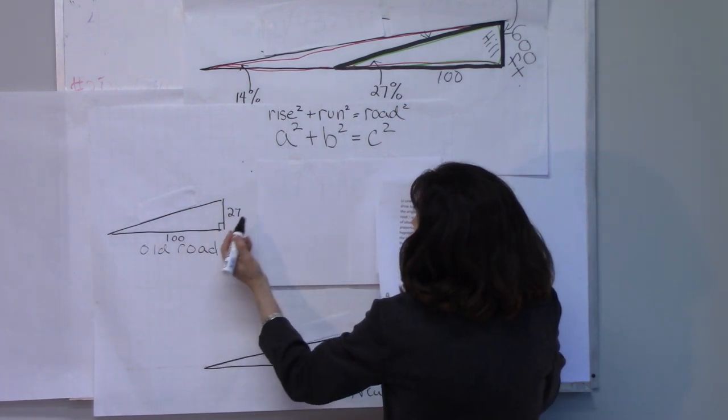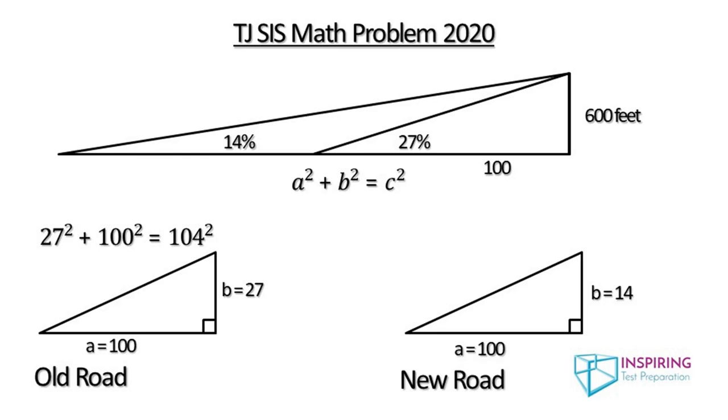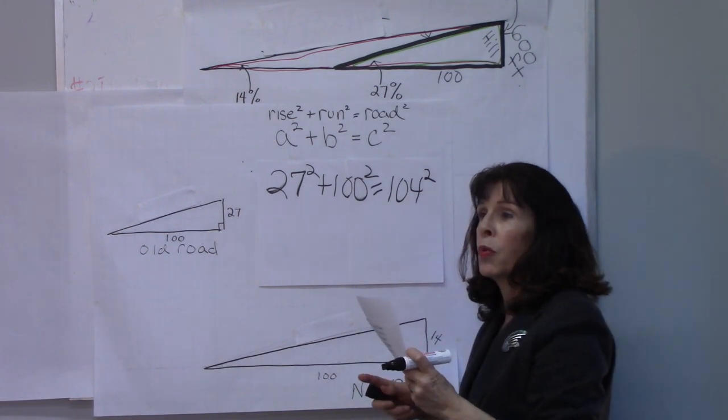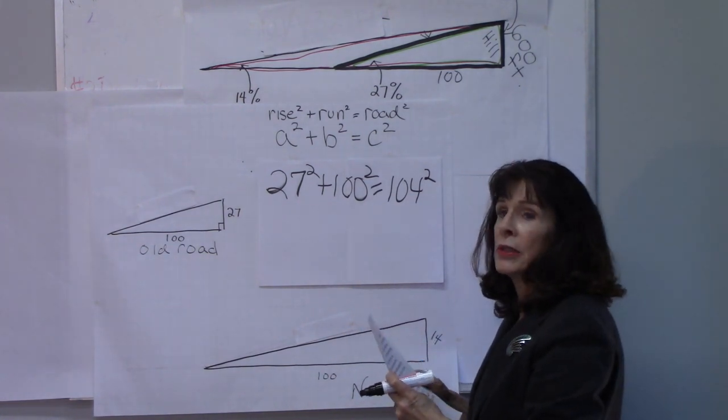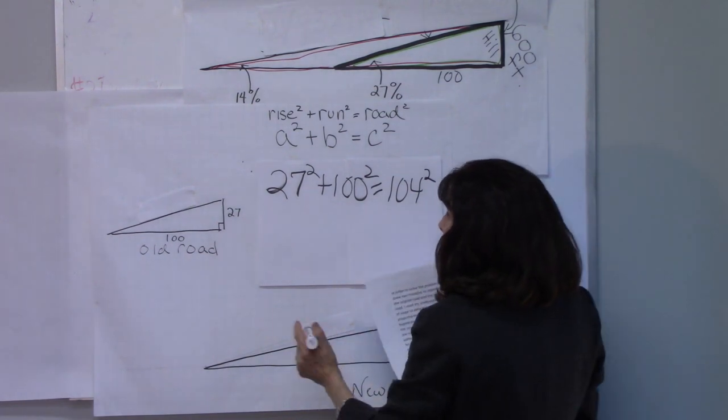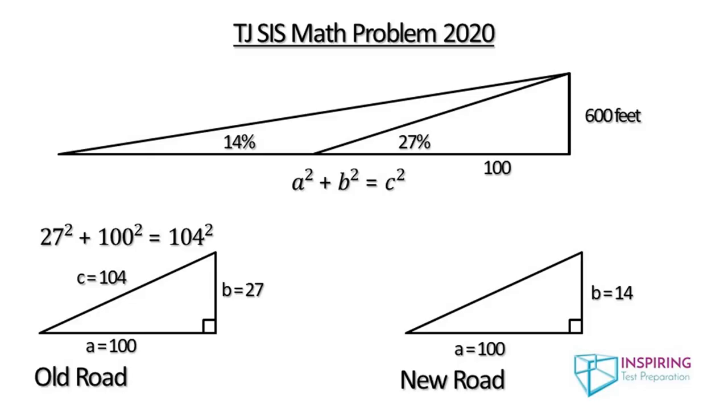Now this will give us a ratio. So 27 squared plus 100 squared will get us 104 squared. And when I did my calculations, I got 103.5 and I rounded up to 104. Now that will get us 104 and that data belongs with the old road.